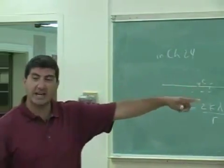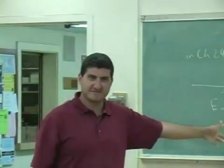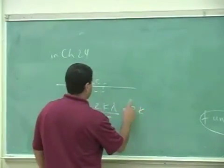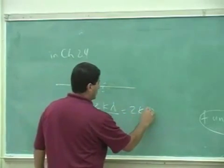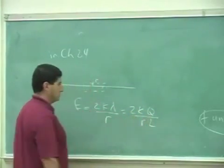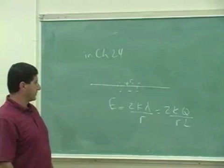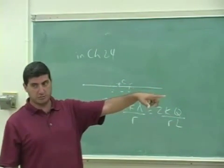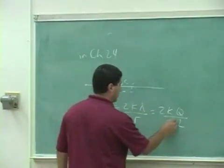That formula that we have is the same as that. Okay. Lambda is the charge density of this, so it's q over l. And the r in this equation is the same as the d in our equation. Okay, so that's the same thing.